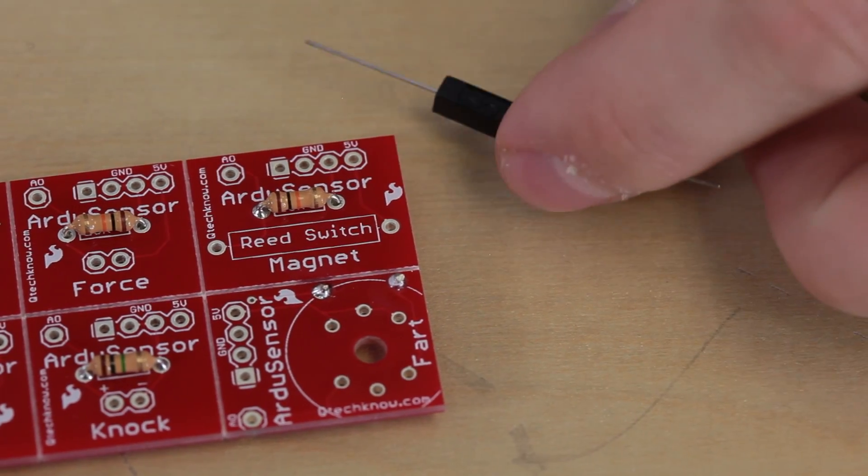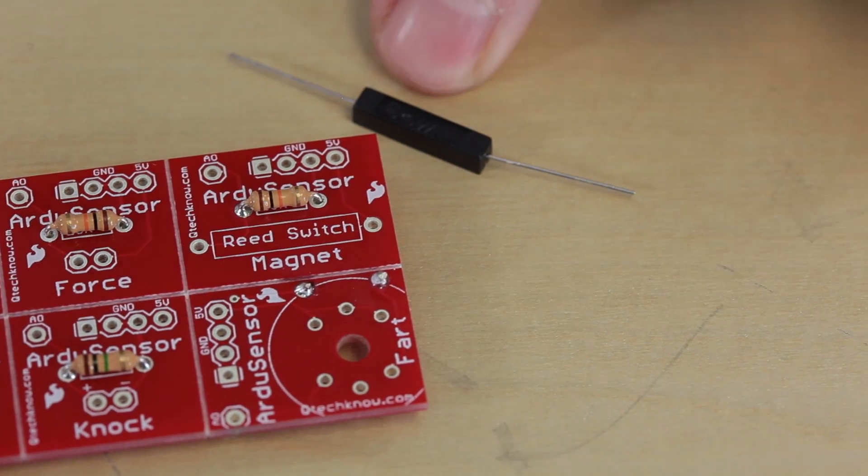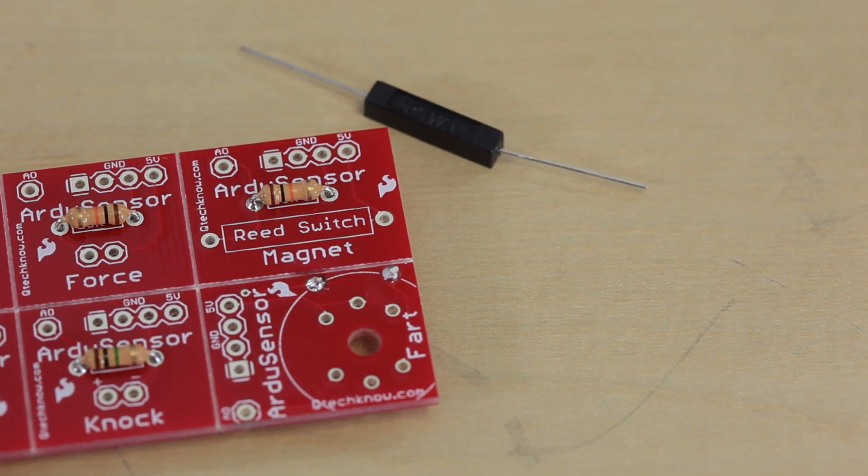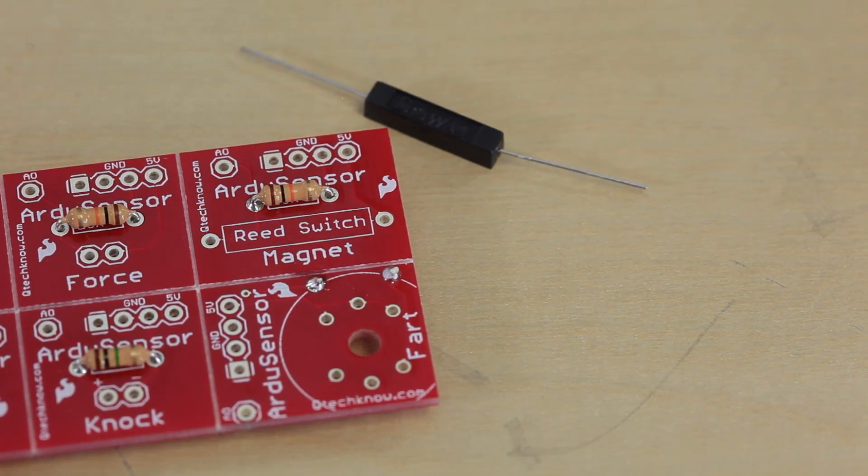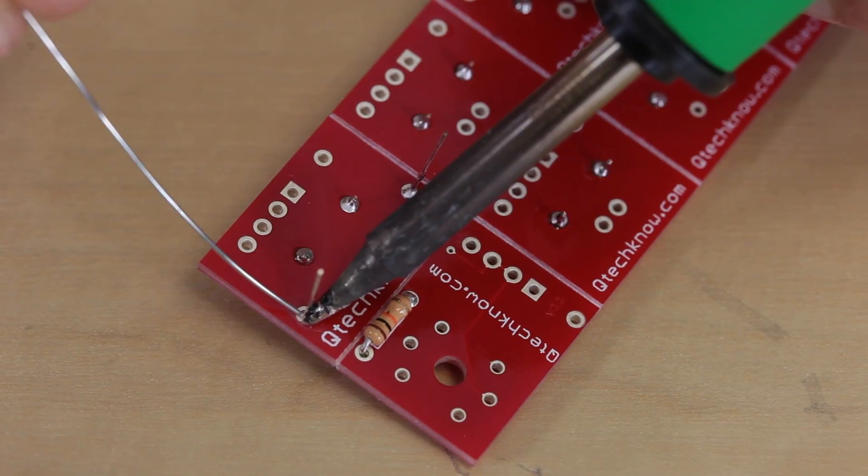Next up we're going to install the reed switch. The reed switch is a little switch that when a magnet is present it turns on, and when the magnet is not present it turns off. We'll just bend the lead straight down, put in the pins, solder it from the back, and be done.